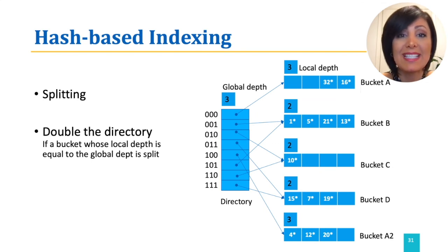After this, if buckets B, C, and D need splitting, since their local depth is not equal to global depth, splitting can happen without doubling the directory. Or just adding the new bucket and using the directory elements accordingly. However, if bucket A or A2 run out of space, since their local depth is again 3, which is equal to global depth, splitting would need doubling directory.